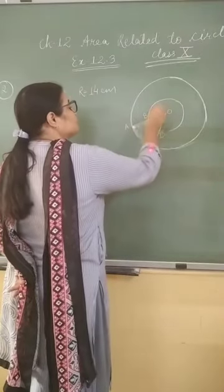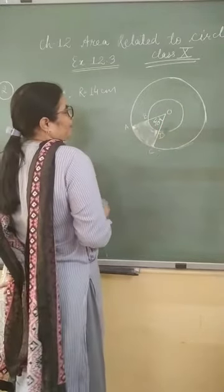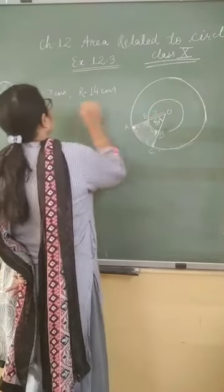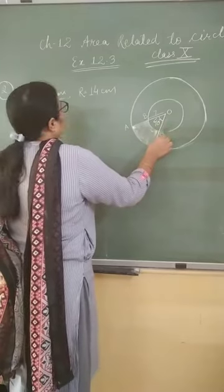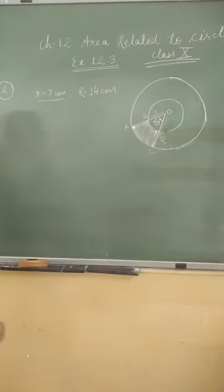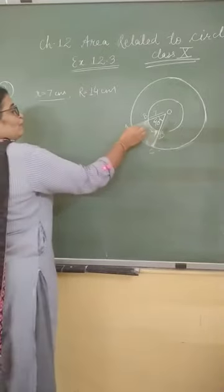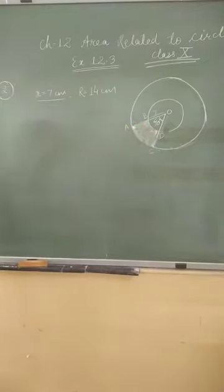Concentric circles means two circles having same center. What I have done? This is 7, so I have taken it small r and this is OC, I have taken capital R as 14. Now, we want to find out the area of this shaded portion. Can you tell me how to do?